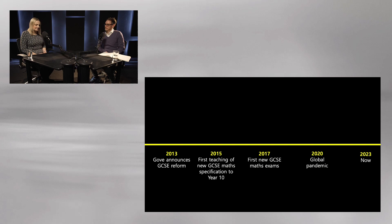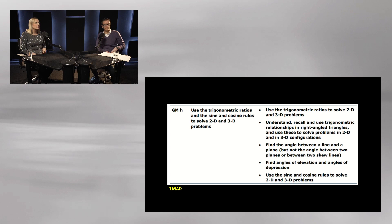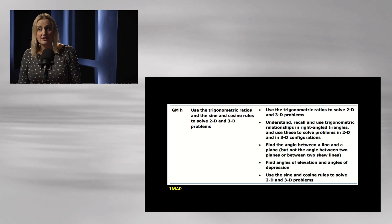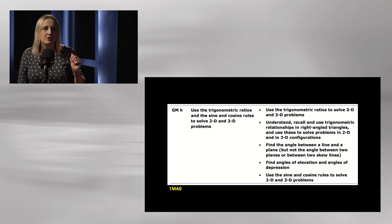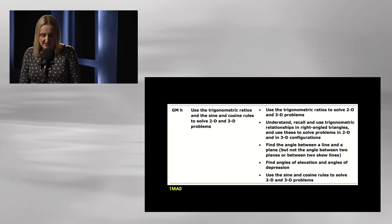This was the old GCSE spec — pre-2015 — and this is the trigonometry content. Notice it's all higher tier; there was no trigonometry at all on foundation tier. We've basically got right-angle trigonometry — what some teachers call SOHCAHTOA — sine and cosine rule, and 2D and 3D problems. Then we have the new spec.